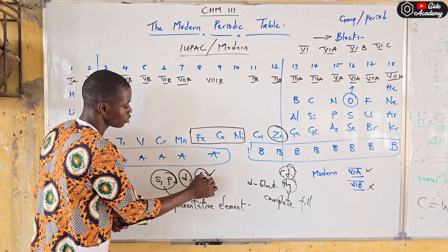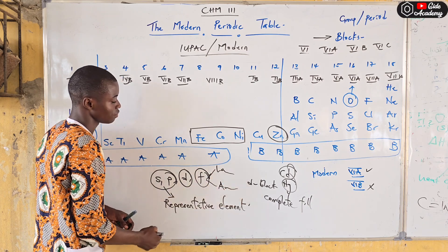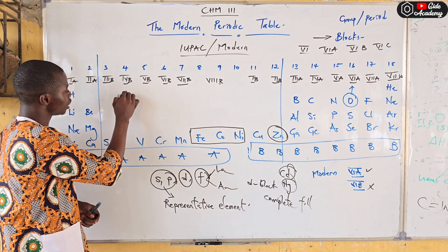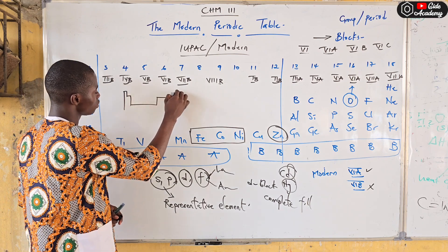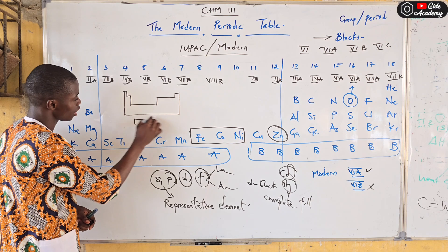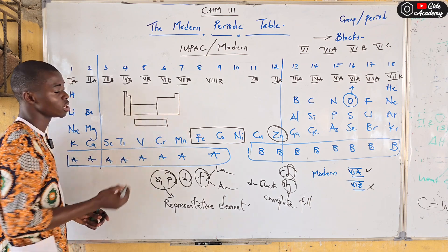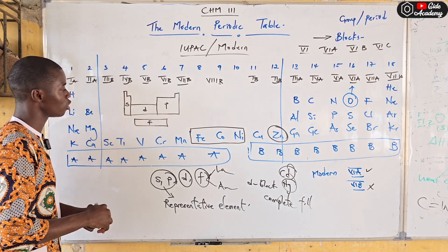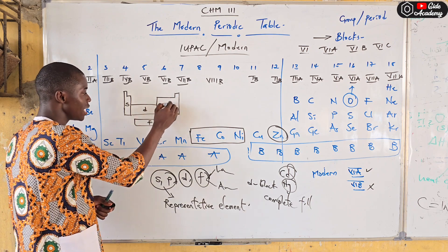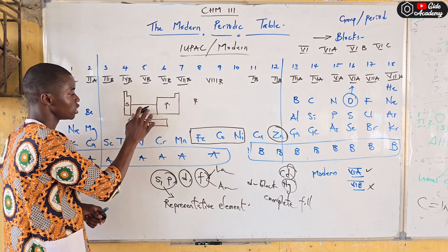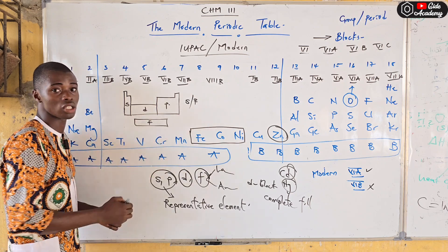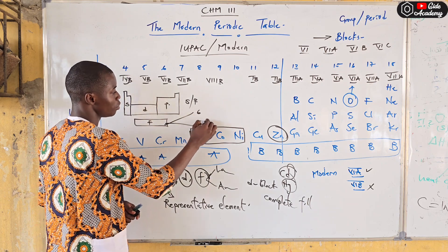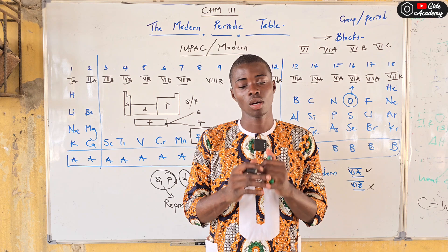The f-block is divided into two series: the lanthanide series and the actinide series (the rare earth elements and the artificial elements). Visually, the periodic table has the s-block on the left, p-block on the right, d-block in the middle transition region, and the f-block separated below. The d-block is called the transition elements and the f-block is called the inner transition elements. The f-block is found in periods 6 and 7.